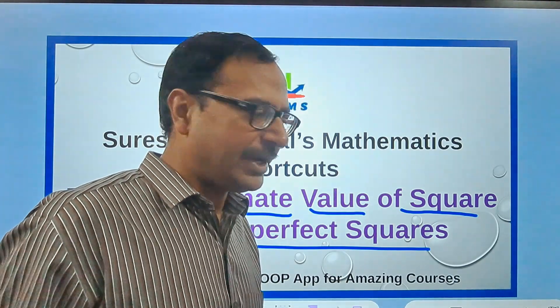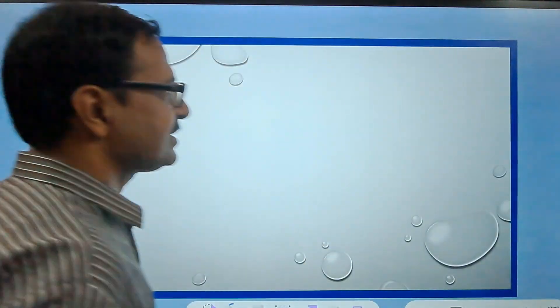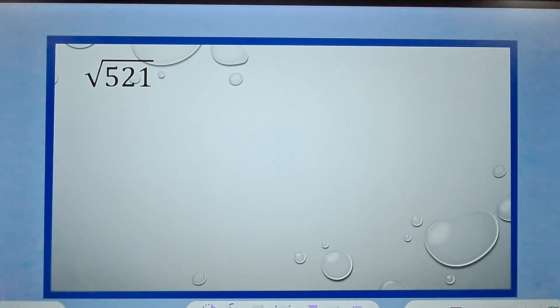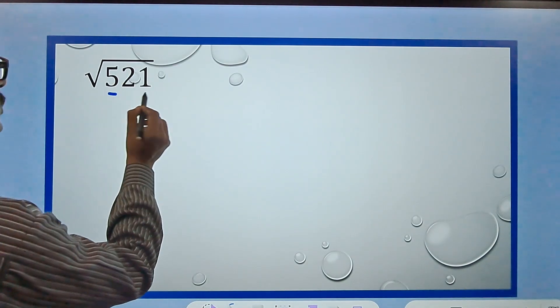Let's see the first example. Here we have square root of 521 and I want to find the approximate answer, that means the answer up to one or two decimal places.